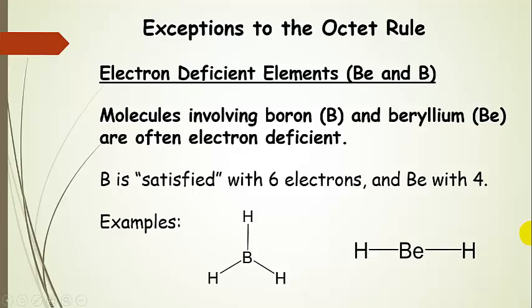These are two electron deficient elements that are okay with less than an octet, and so that is a correct Lewis structure for those two molecules.